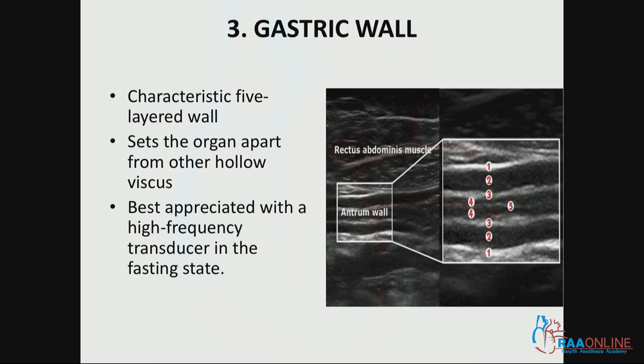When you look at the gastric wall, number one is the serosa — the outside structure, which is a hyperechoic thin layer — followed by number two, muscularis propria. Three is the mucosa, and four is the muscularis mucosa. So there are five layers basically. When the patient is fasting and hungry, and if you are using a linear probe, you will see all five layers.